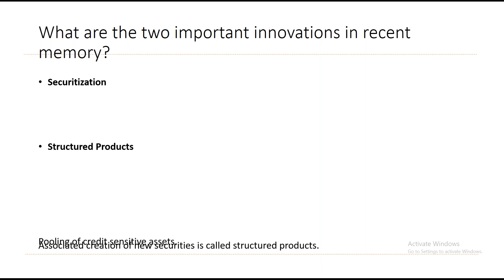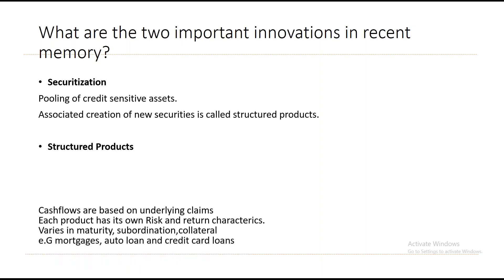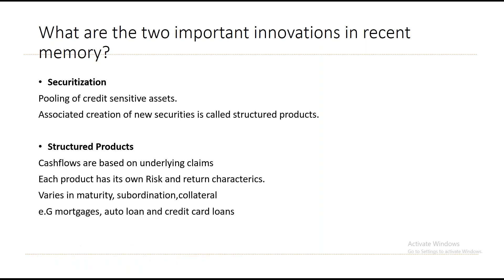Securitization is the pooling of credit-sensitive assets and the creation of new securities called structured products. Structured products have cash flows based on underlying claims. Each product has its own risk and return characteristics. They vary in maturity, subordination, and types of collateral — for example, mortgages, auto loans, and credit card loans.